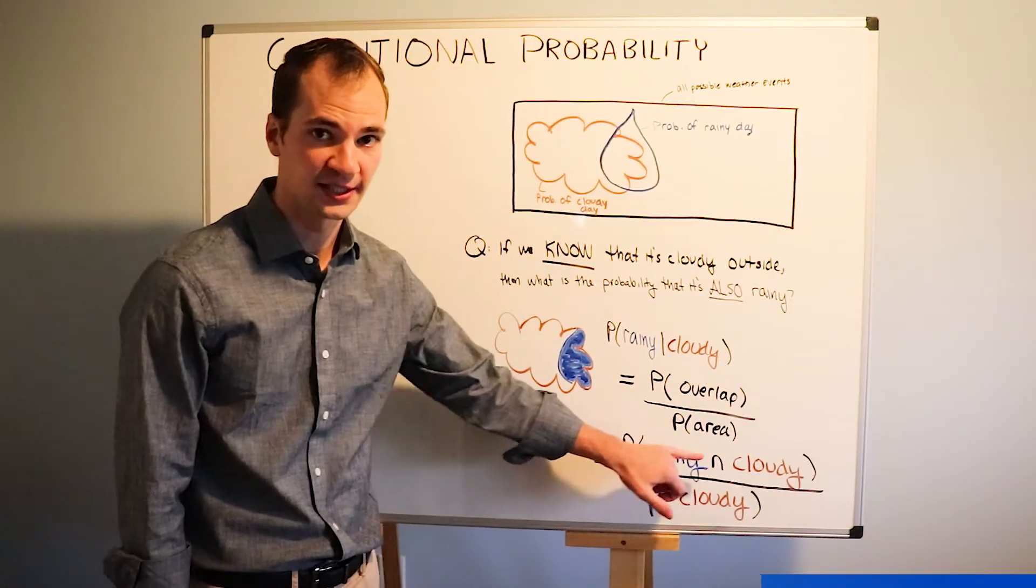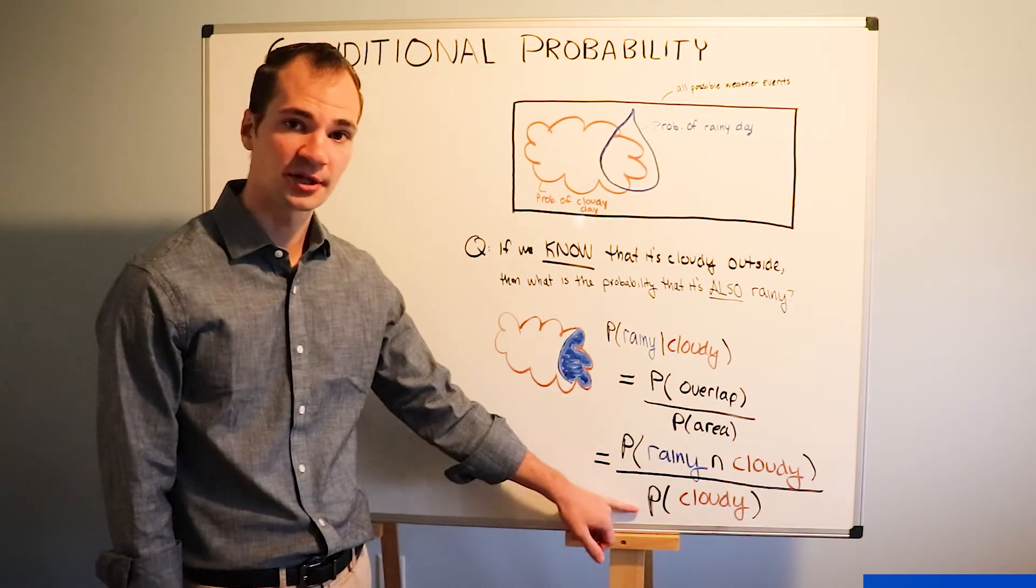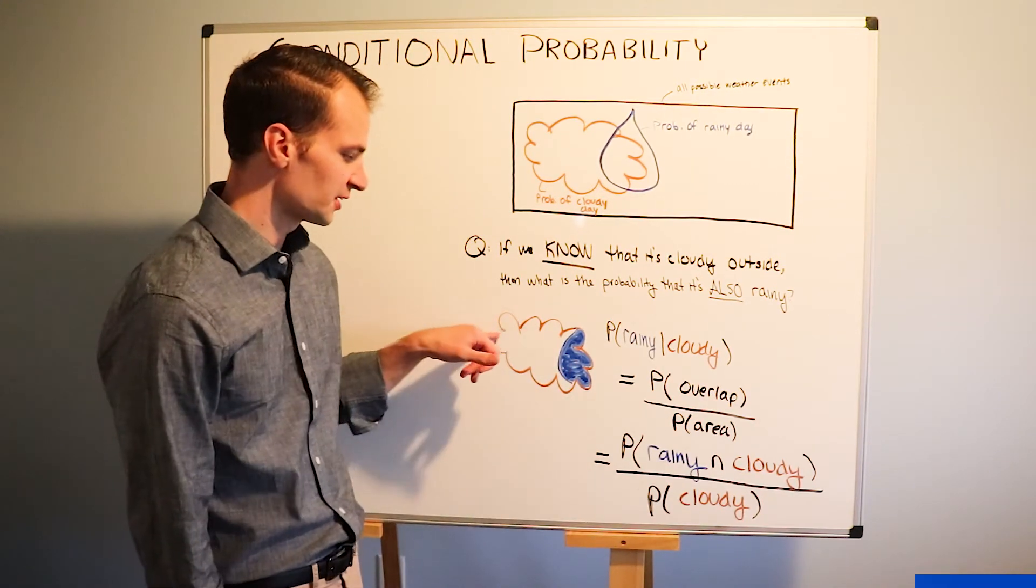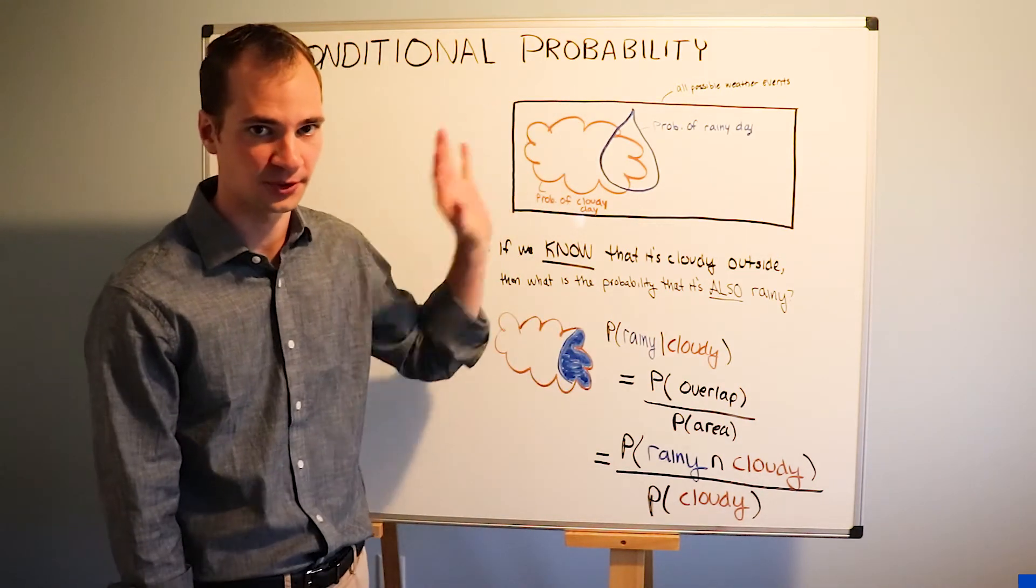We take the probability that it's rainy and cloudy represented by this shaded area divided by the probability that it's cloudy represented by this cloud shade. So we take this cloud out of the sample space and we ignore the rest of it.